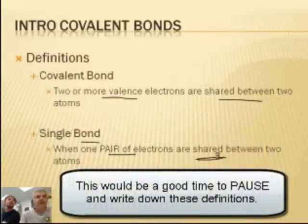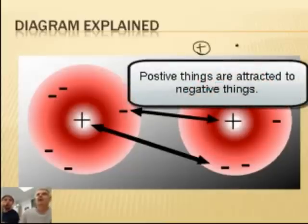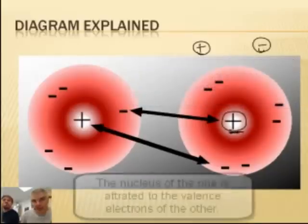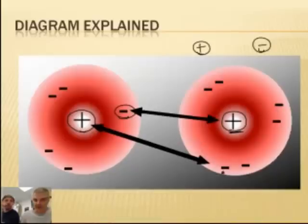So it's the sharing principle. Let's talk about what causes atoms to be attracted to each other. It's the same thing we learned about in the last two bondings — positive things are attracted to negative things. Now, it's not the positive ion. It's actually the nucleus of one atom that is attracted to the valence electrons of the other, and the nucleus of the other is attracted to the valence electrons of the one. So it's still positive things attracted to negative — that's what causes atoms to get stuck together.